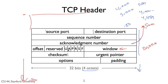The bits U, A, P, R, S, and F are control bits. Starting with the less common ones: U is the urgent bit, meaning this data is particularly urgent — get it to the application quickly. P is the push bit, which says please push this data to the receiving application immediately.